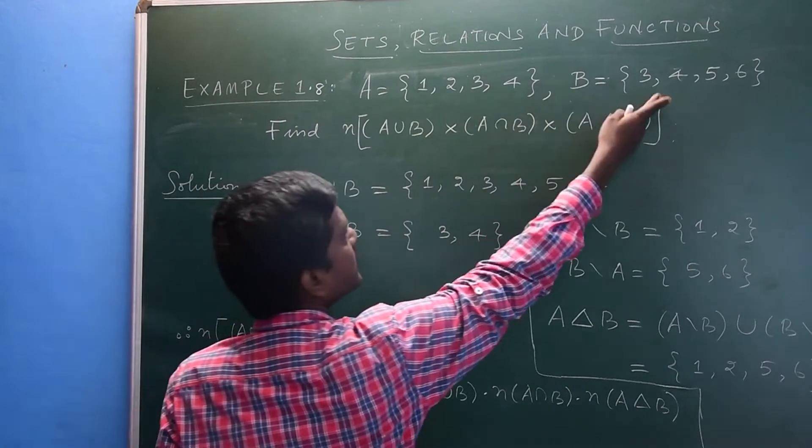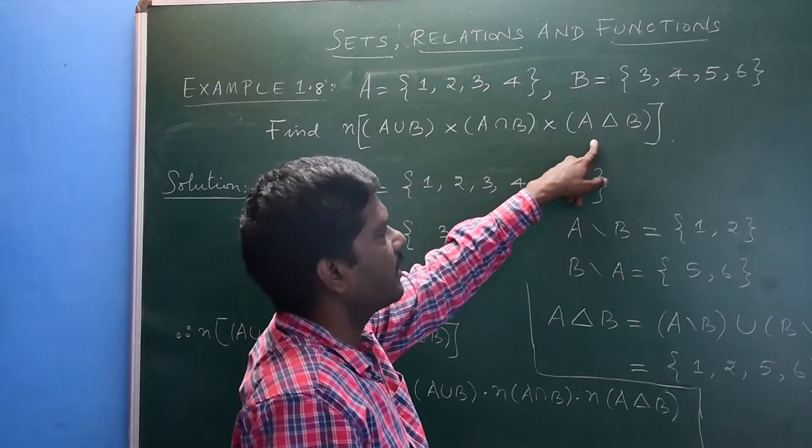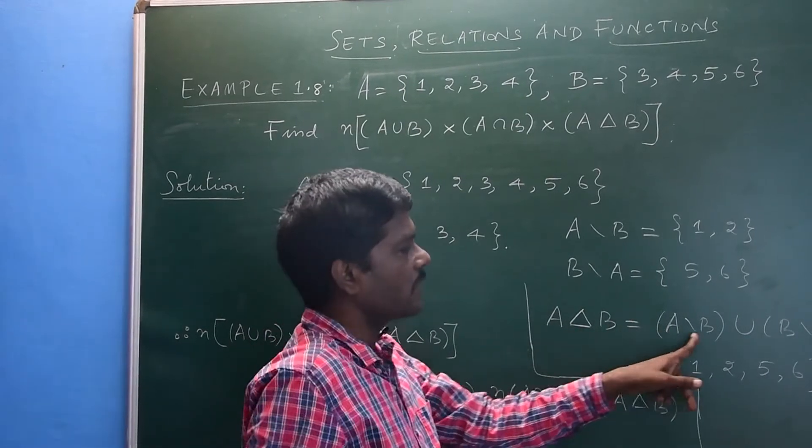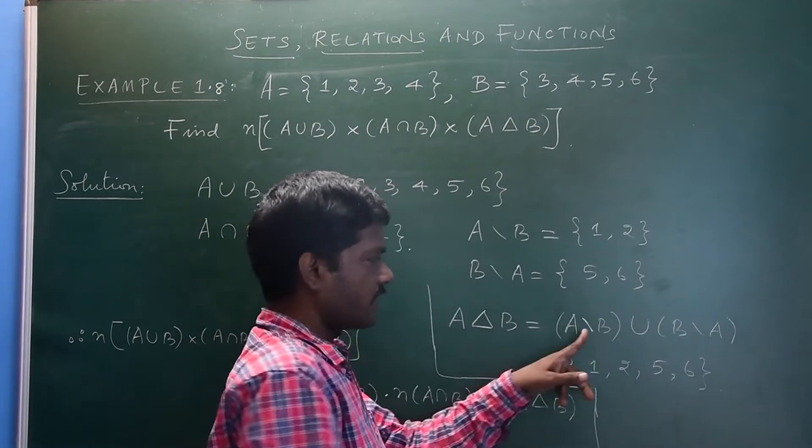A intersection B is the elements which are common to both A and B. To find the symmetric difference, symmetric difference of the sets is defined as A minus B union B minus A, and this symbol stands for set minus.